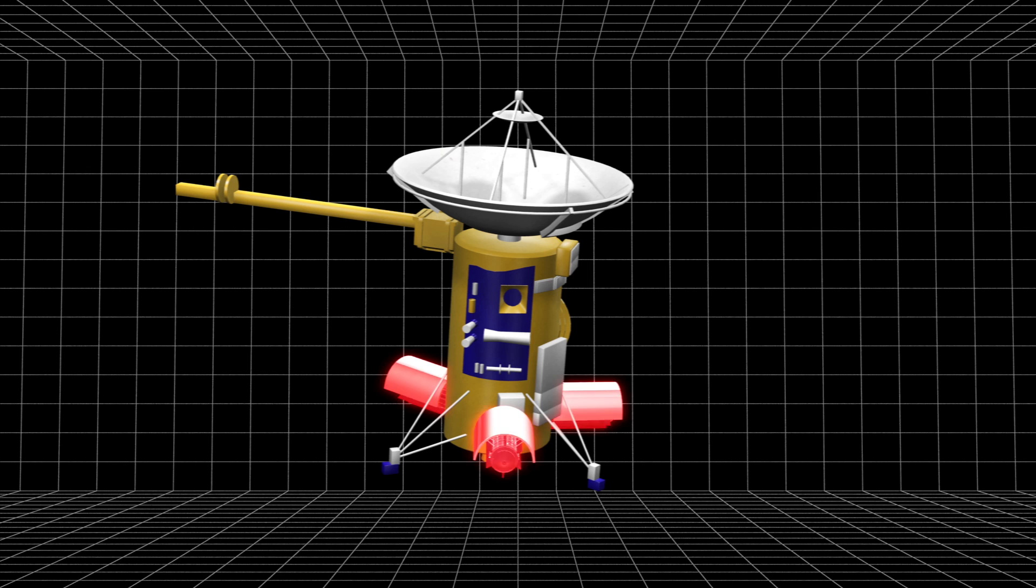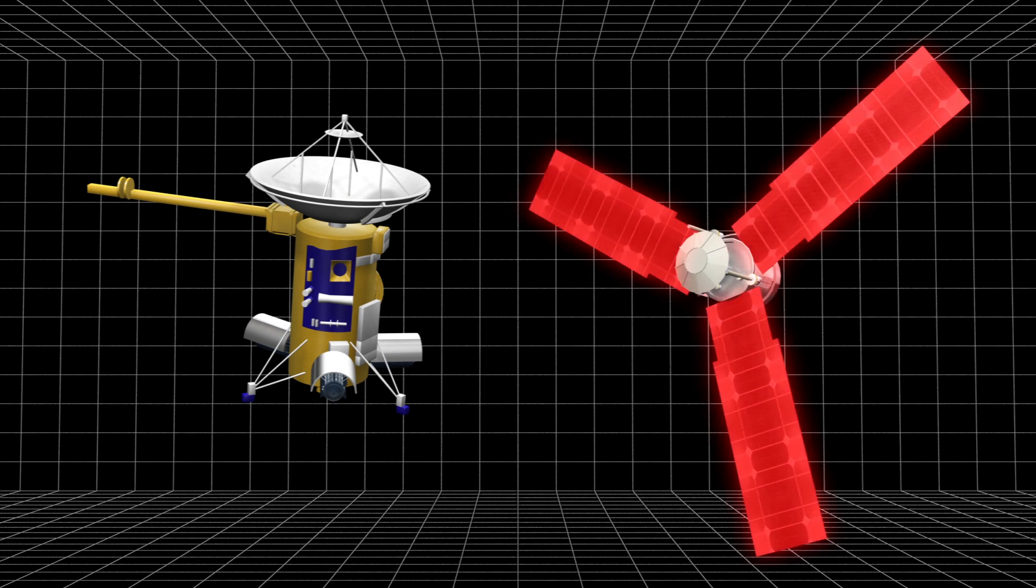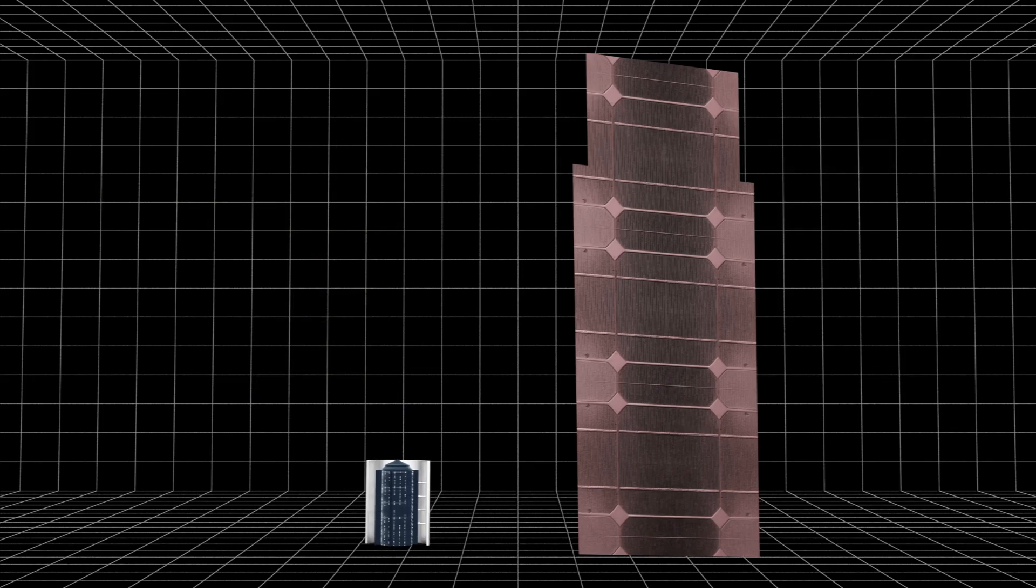RTGs, such as those used on the Cassini space probe, are much smaller than solar panels and have no moving parts to break.